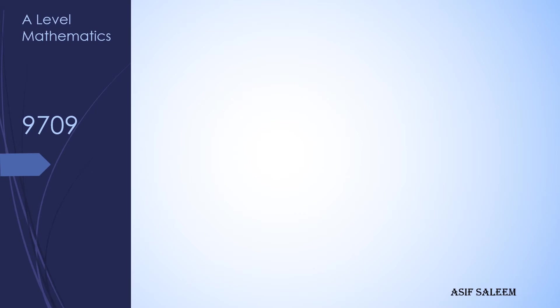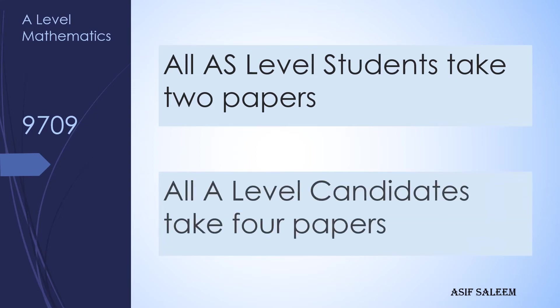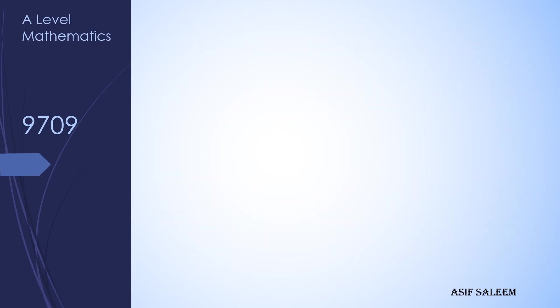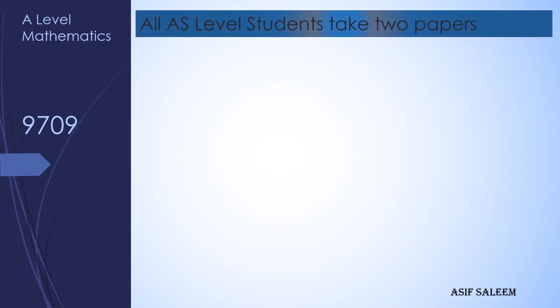In A-Level Mathematics, syllabus code 9709, we have two different routes available. The first one is for AS Level students who will take initially two papers, and A-Level students who will take all four papers together in one go.